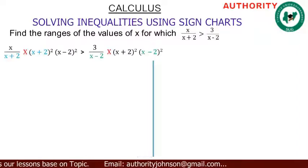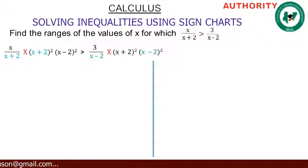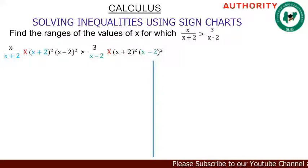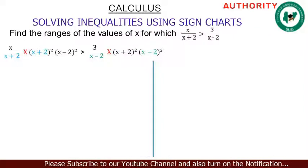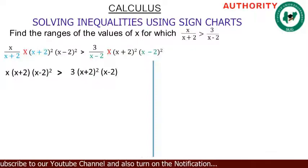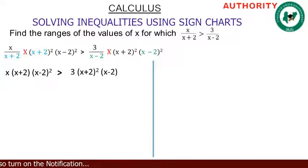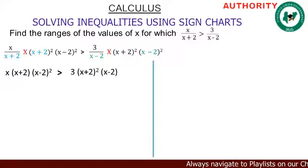So we have x over (x+2), multiplied by (x+2)² times (x-2)², is greater than 3 over (x-2), multiplied by (x+2)² times (x-2)². After cancellation, the left side gives x·(x+2)·(x-2)², and the right side gives 3·(x+2)²·(x-2).